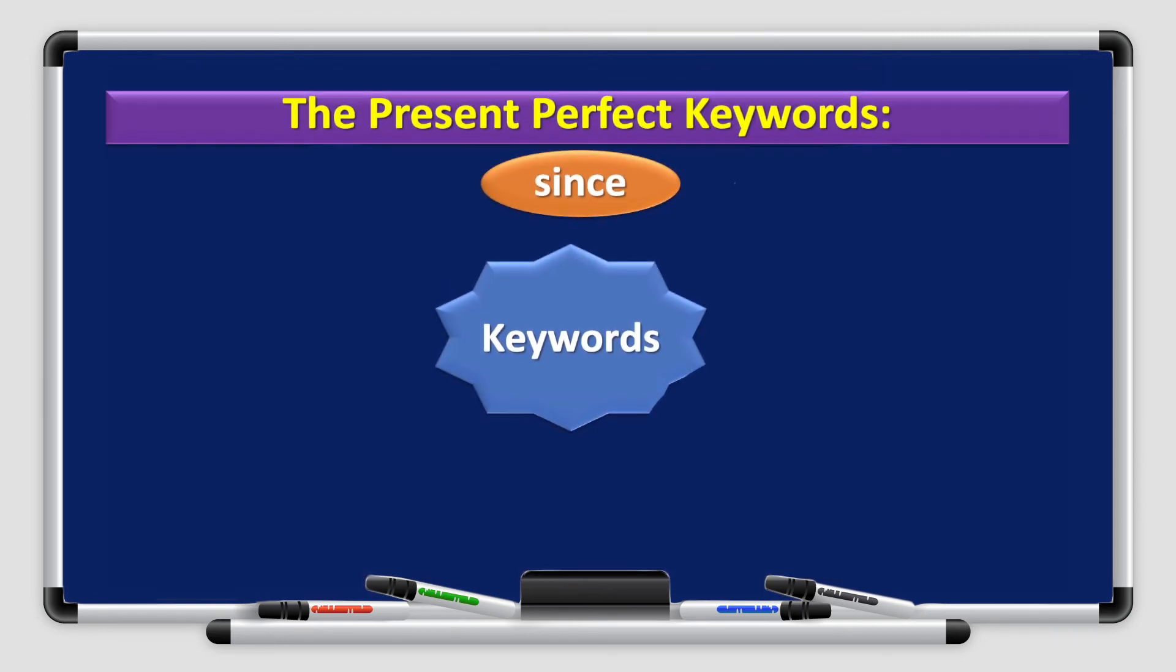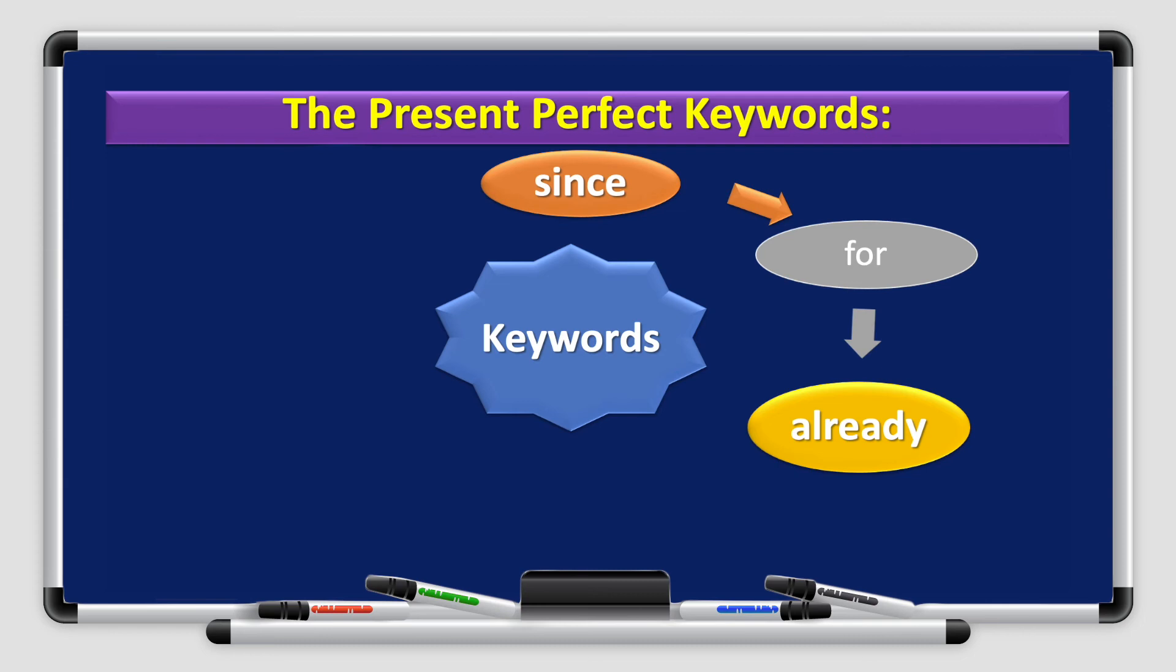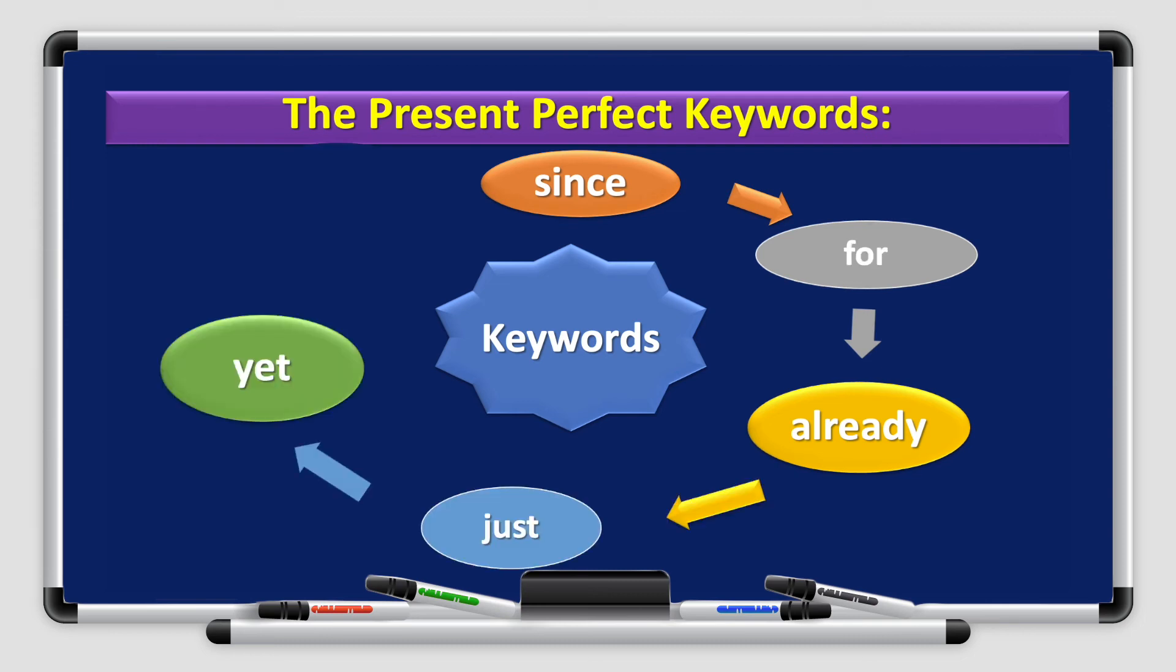With the present perfect, there are some keywords that we use in order to help us identify this certain period of time. You have since, for, already, just, yet, and ever. And whenever you see any of these words in a sentence, in the present perfect, you'd understand which tense that is being used.